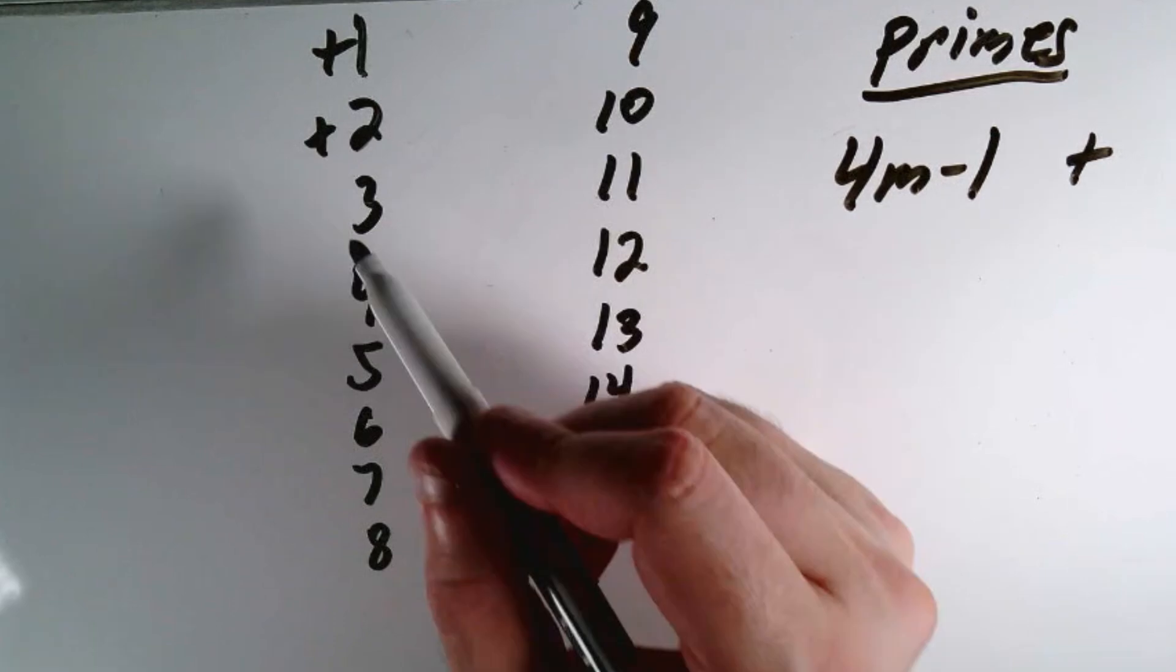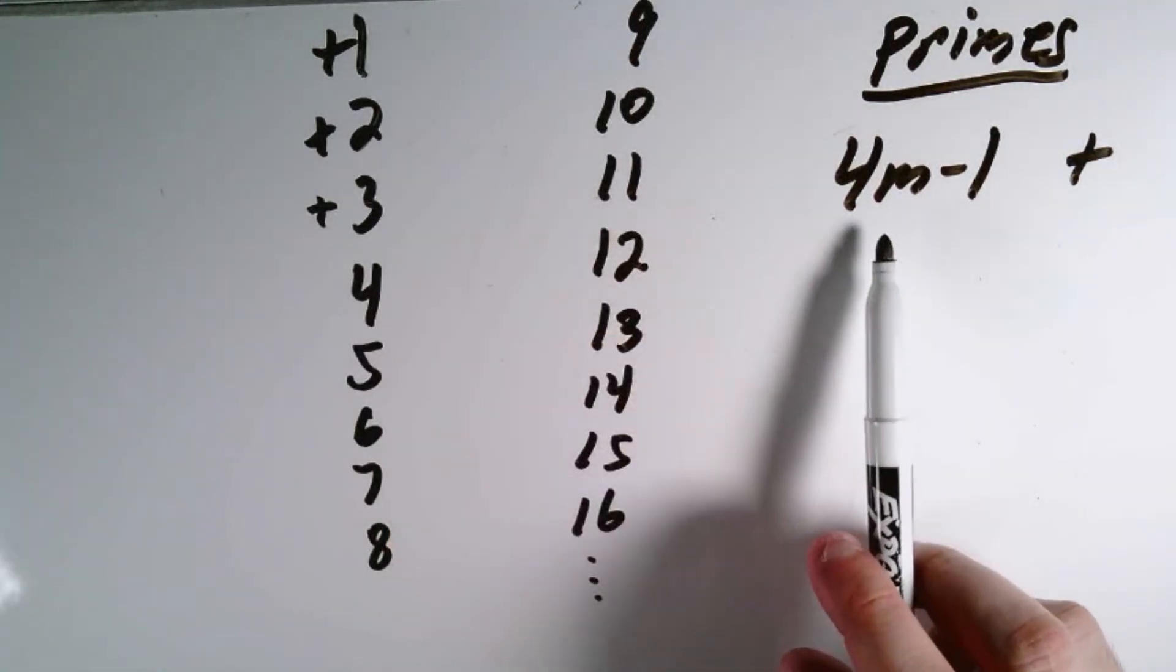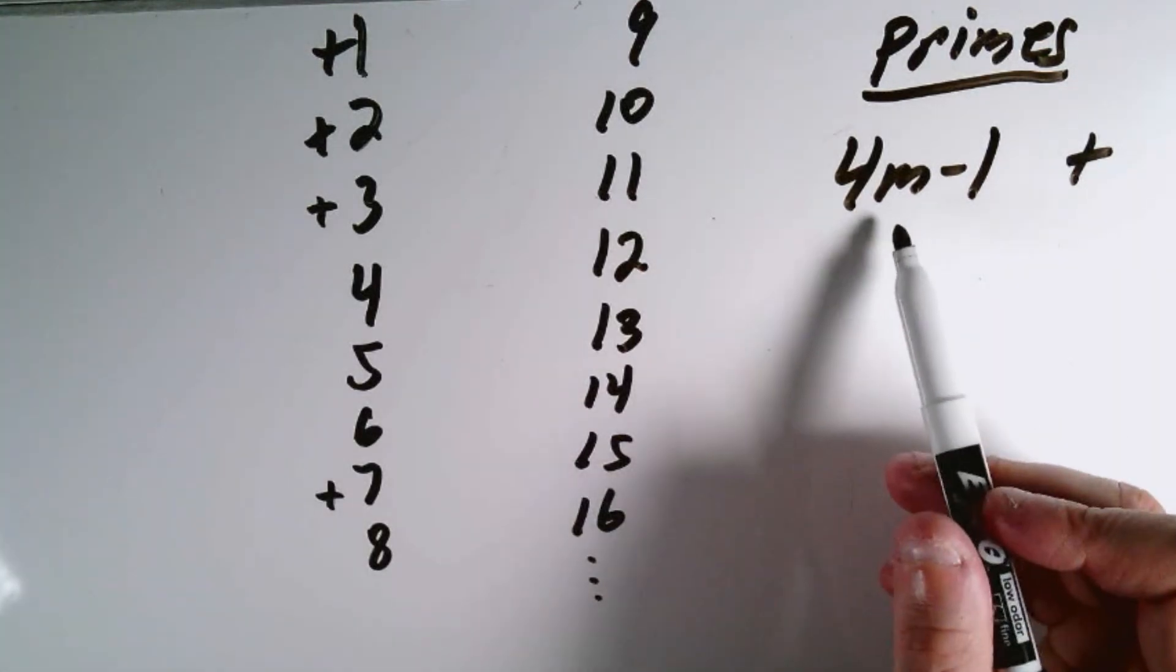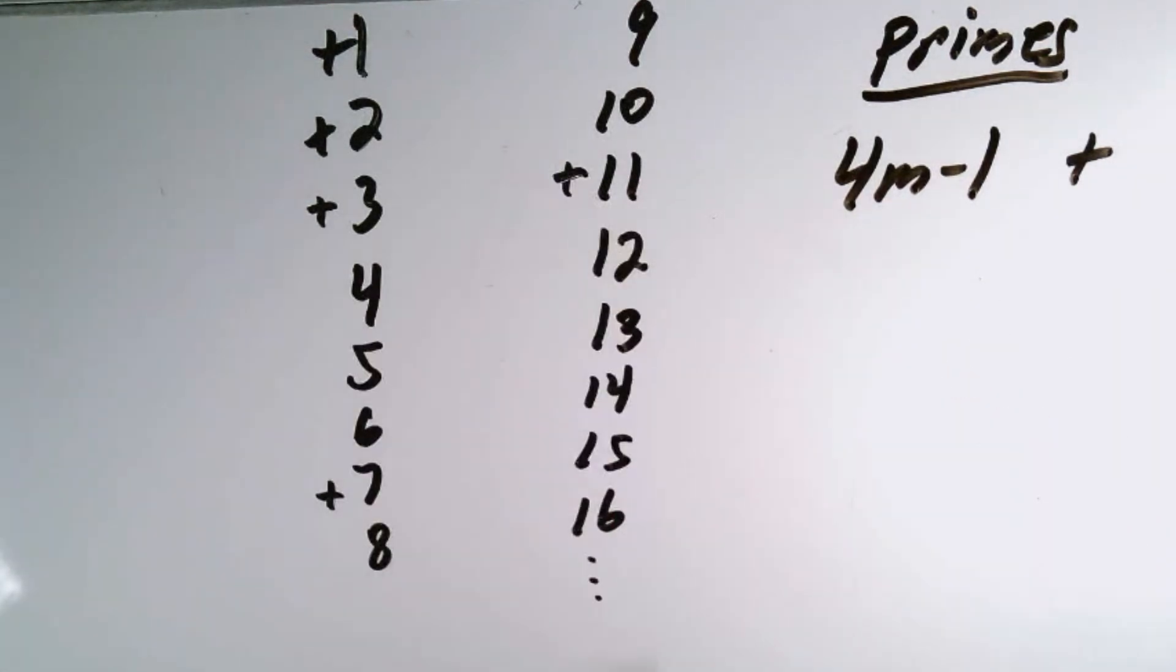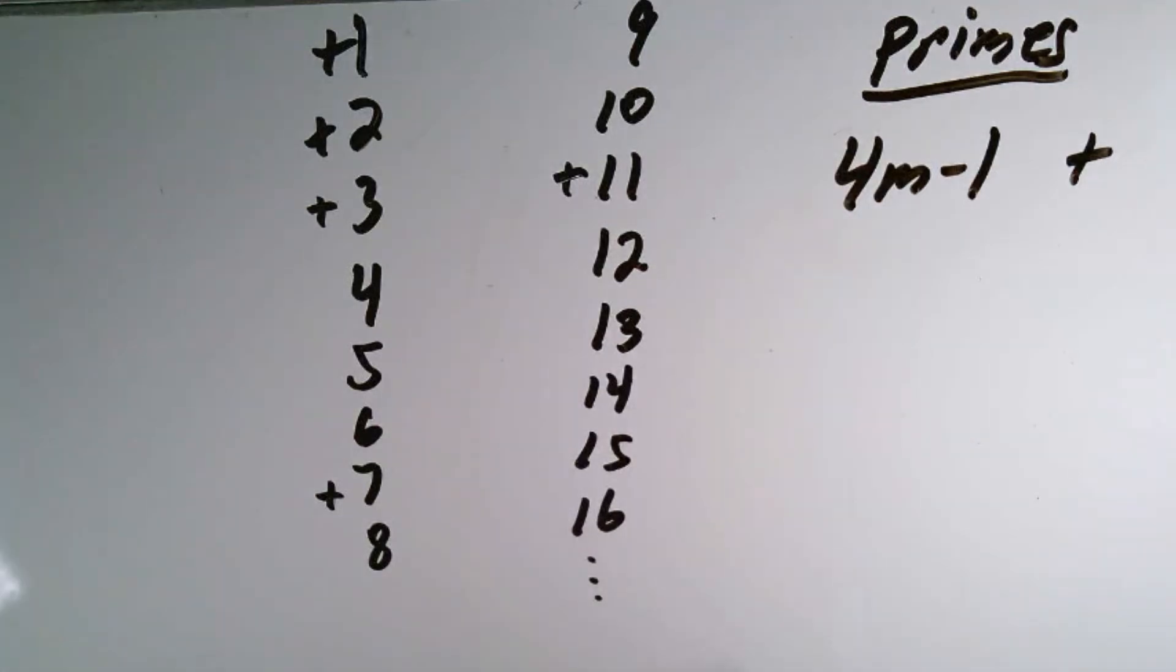So like if m is 1, then we get 3 for this. Therefore, 3 is positive. If we plug in 2 for m, we get 7, which is prime, so that's positive. If we plug in 3 for m, we get 11, which is positive. But if we plug in 4 for m, we get 15, which is not prime, so we leave that alone for now.